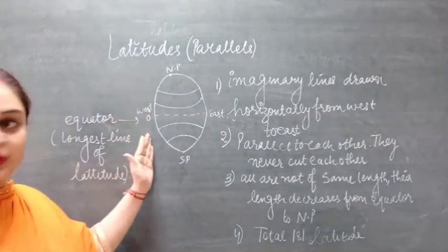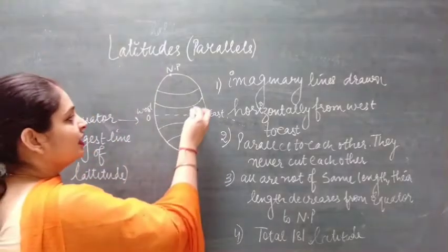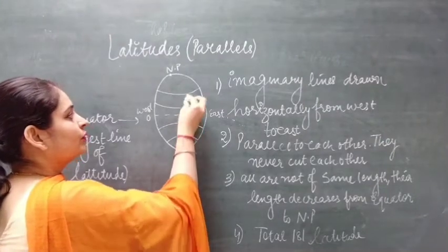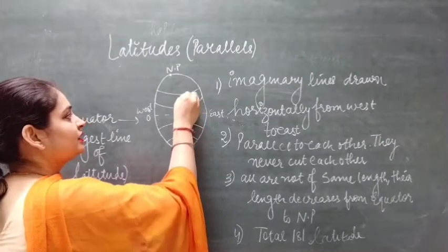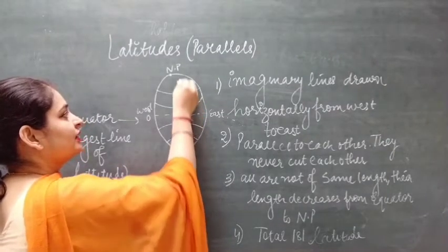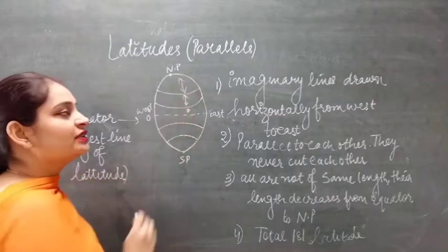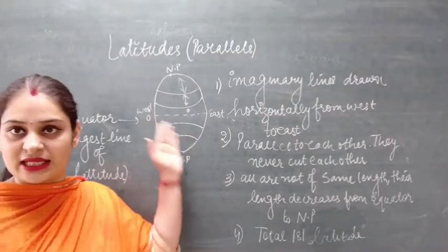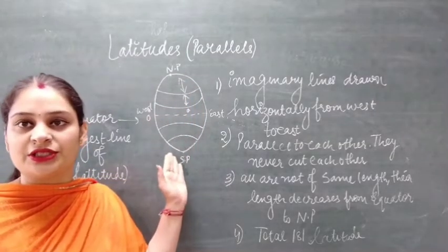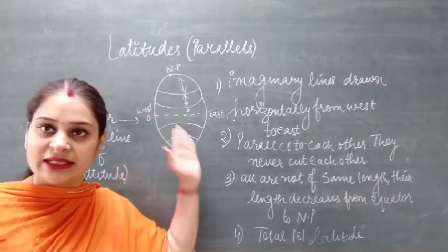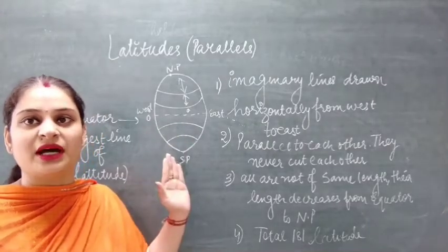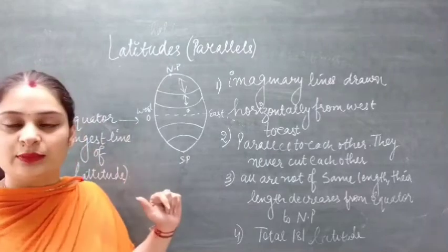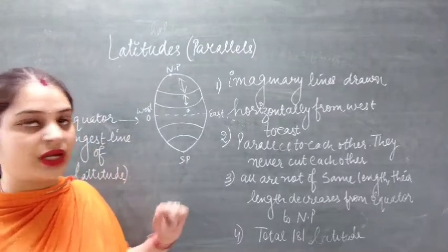All latitudes are not of the same length. As you can see, the distance here is more, and the distances vary at different positions. So they are parallel to each other, but the length difference between all of them is not the same. There are a total of 181 latitudes on the globe.